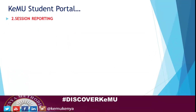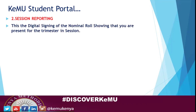After logging into the student portal using your registration number and password, the second thing you should do immediately is session reporting. This is now from January, because for September we automatically did that for you administratively. Session reporting is like the digital signing of the nominal roll, showing that you're present for a specific trimester. If you don't do session reporting, even if you get assignments, attend classes, or do CATs, the system will not recognize you and you won't be able to do anything going forward.